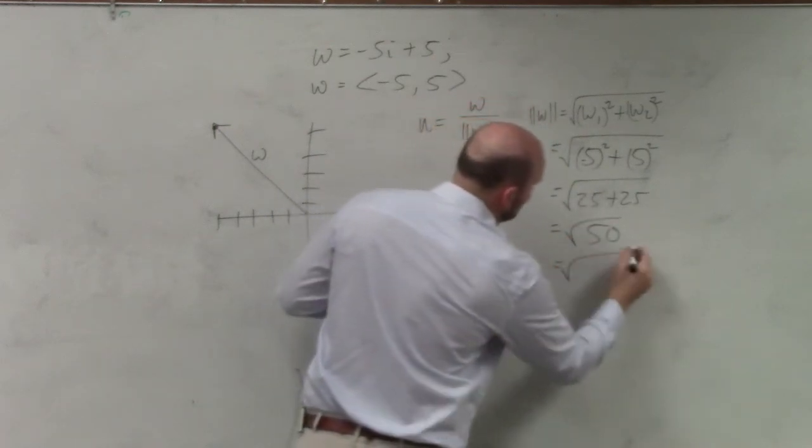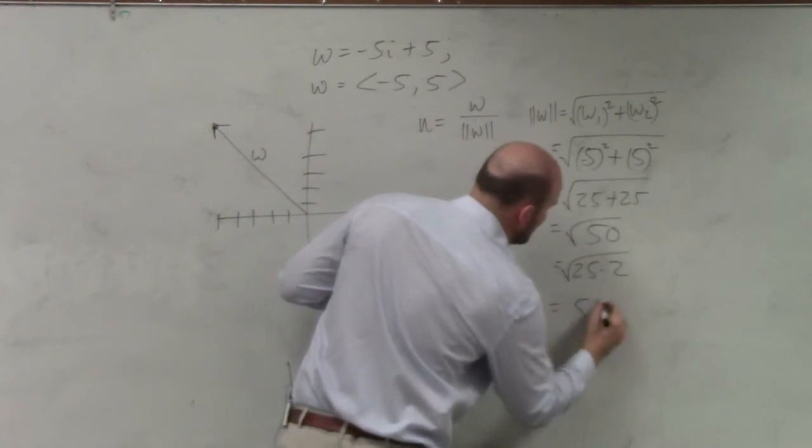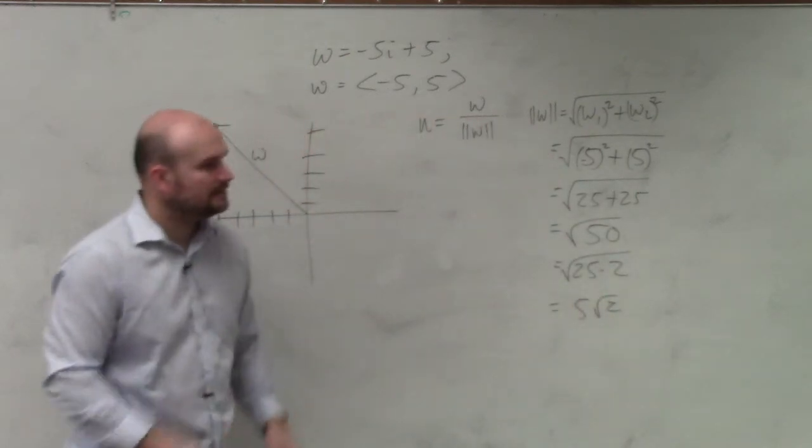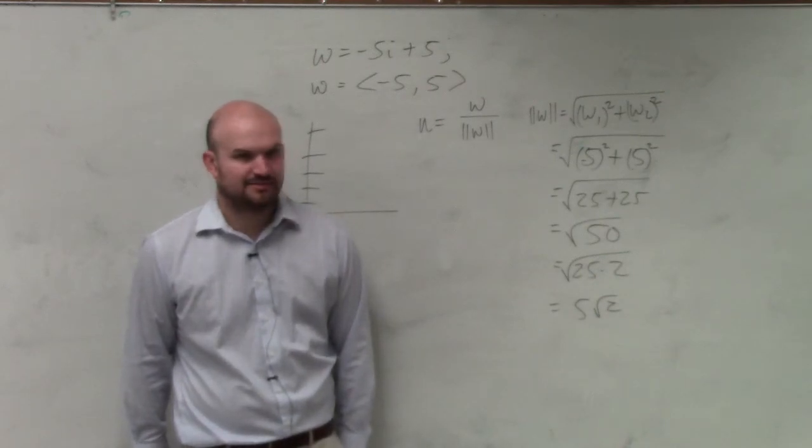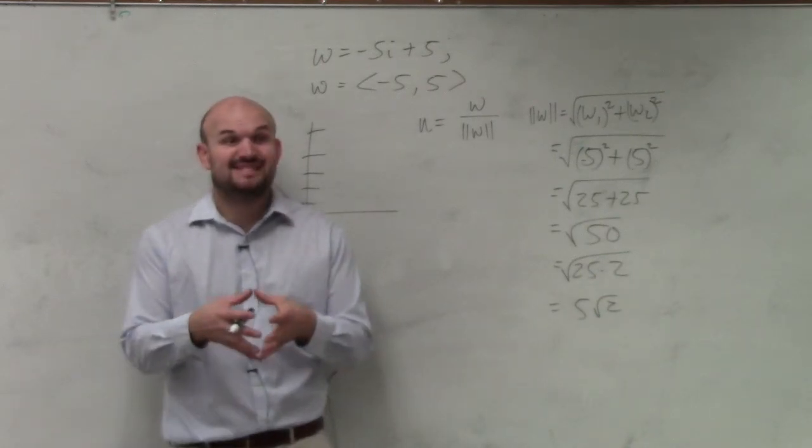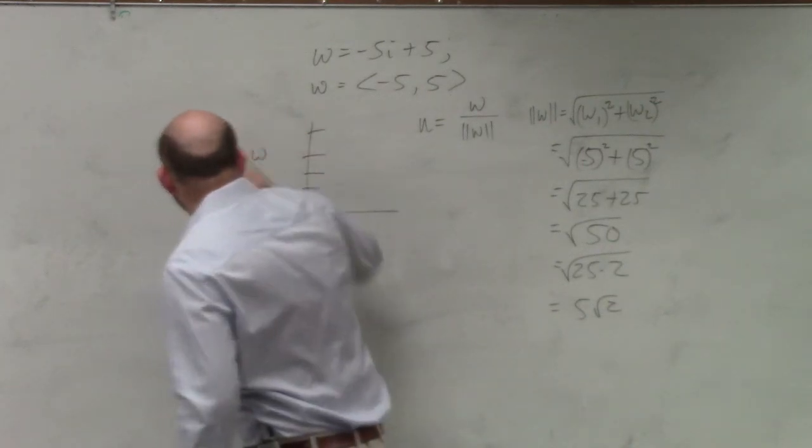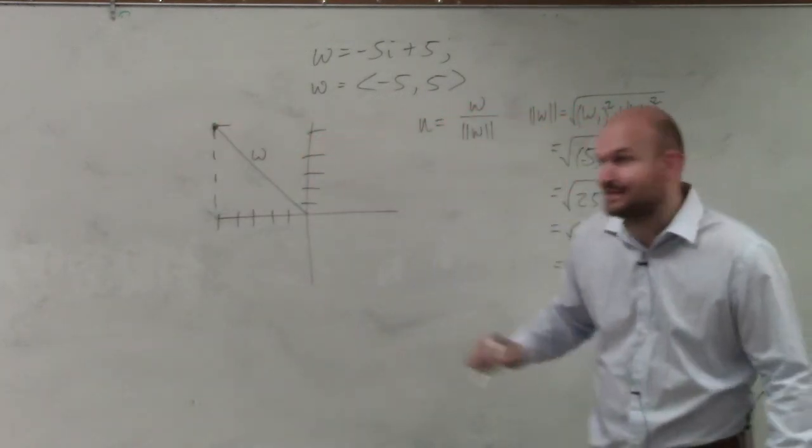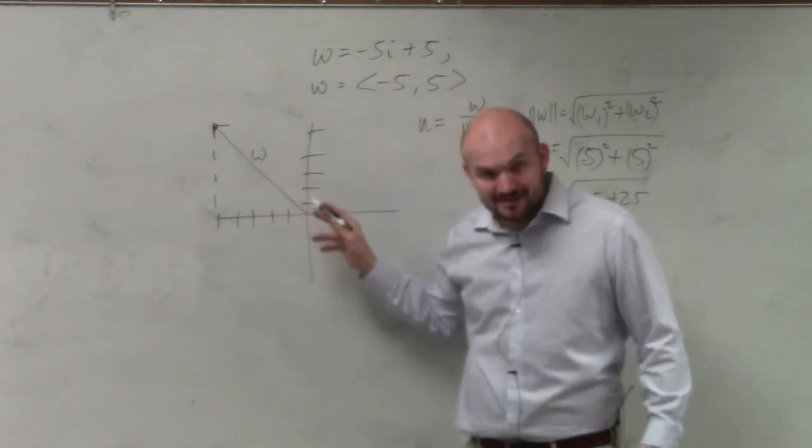If you guys remember, simplify the radical. That's 25 times 2 equals 5 square root of 2. Does everybody follow me with finding the magnitude? The magnitude is the length, right? And would you guys agree that if I was going to create a triangle on this, 5 squared plus 5 squared equals the length of that, right?